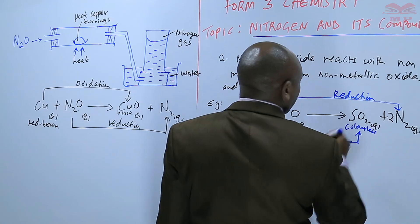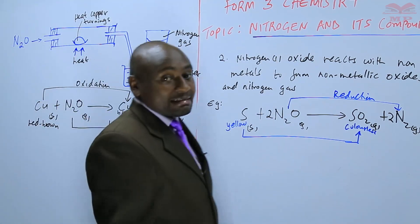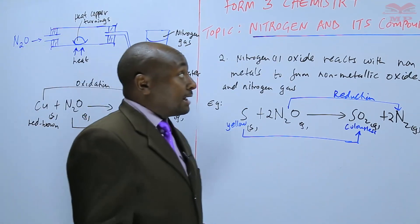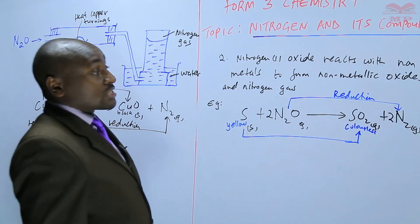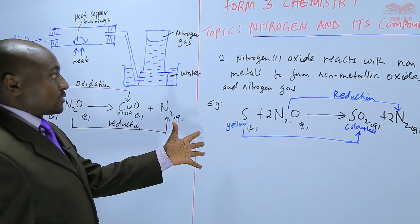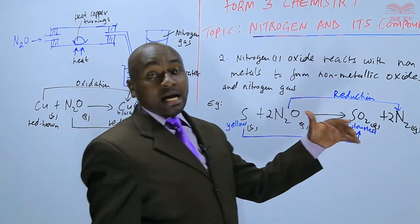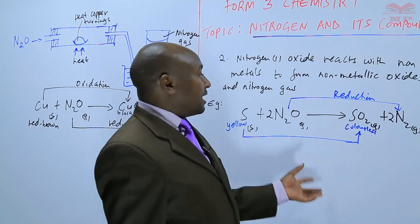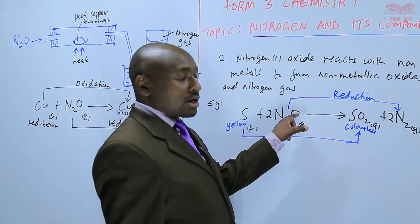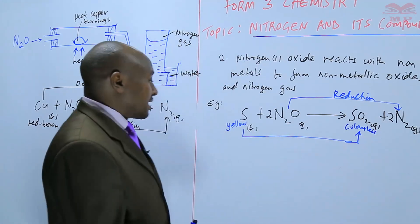Basically, nitrogen one oxide has the properties of oxygen in that it supports the oxidation of heated metals and also non-metals. In the process, the metals and non-metals are oxidized by the oxygen present in nitrogen one oxide, and the other product formed is nitrogen gas.